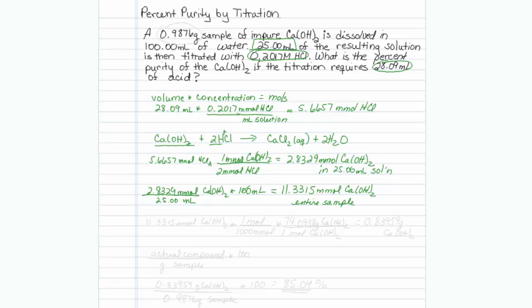Alright, well, we've got millimoles of calcium hydroxide. It's not too hard from this point on. We will just take our 11.3315 millimoles of calcium hydroxide. We will divide by 1,000 millimoles per 1 mole, just to get our units squared. And if you add up the atomic masses, you'll discover that there are 74.0938 grams of calcium hydroxide for every 1 mole of calcium hydroxide. That's the molar mass. And multiply this out will give us 0.83959 grams of calcium hydroxide.